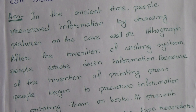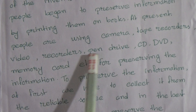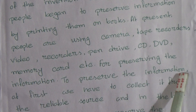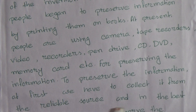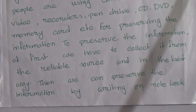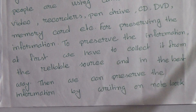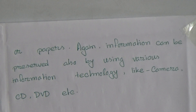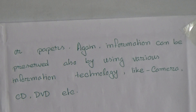At present, people are using cameras, tape recorders, video recorders, pen drives, CDs, DVDs, memory cards, etc. for preserving information. To preserve information, we first have to collect it from a reliable source and in the best way. Then we can preserve it by writing in notebooks or on papers. Information can also be preserved using various information technologies like cameras, CDs, DVDs, pen drives, and other storage devices.